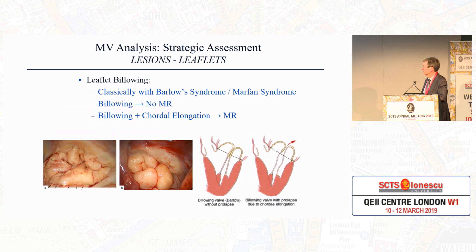Leaflet billowing can affect any of the segments. A billowing valve without prolapse does not necessarily cause regurgitation. In order to have regurgitation, in addition to billowing leaflets, you also need elongation of the cords to cause prolapse — as may be seen with Marfan syndrome. Billowing with cordal elongation, however, will create mitral regurgitation.